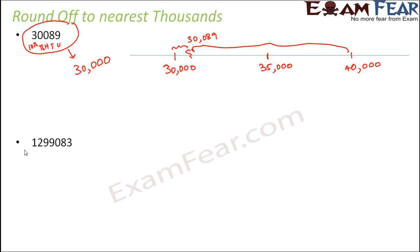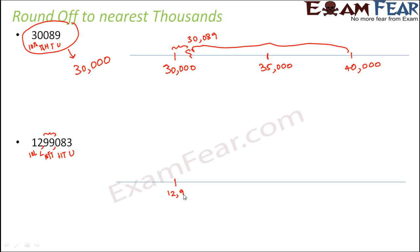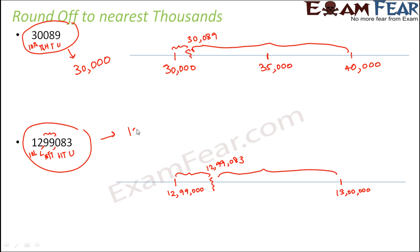Let's take a bigger number: 12,99,083. We want to round it off to thousands. The place values are units, tens, hundreds, thousands, ten-thousands, lakhs, and ten-lakhs. When rounding to thousands, this number lies somewhere between 12,99,000 and 13,00,000. This number lies very close to 12,99,000, therefore we can round it off to 12,99,000 when rounding to the nearest thousands.